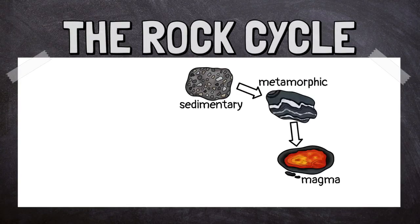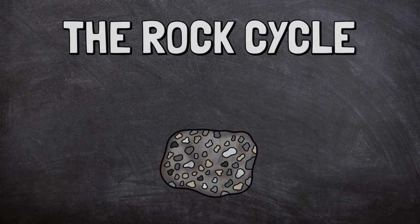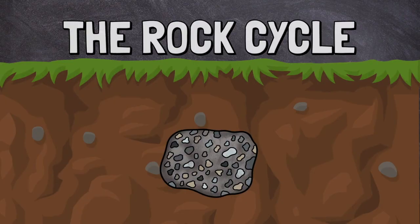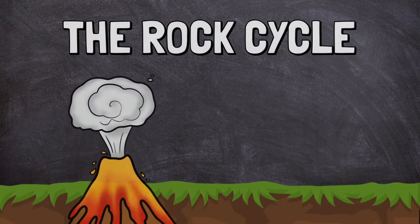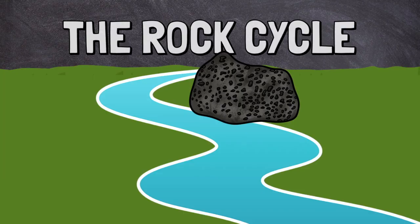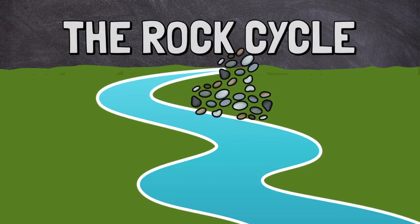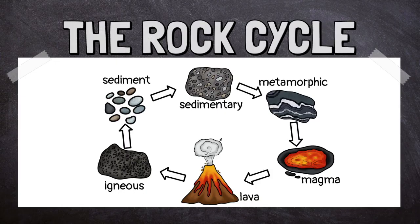Rocks are constantly changing between the three types of rock in a process called the rock cycle. A sedimentary rock may become buried under the earth. The heat and pressure of the layers of rock above may change it into a metamorphic rock. If the heat gets too high, it may melt into magma and later cool into an igneous rock. Then, the igneous rock is exposed to weathering on the surface. Little bits of it wear away and run downstream where they collect and are eventually cemented together to form another sedimentary rock. And the cycle continues.